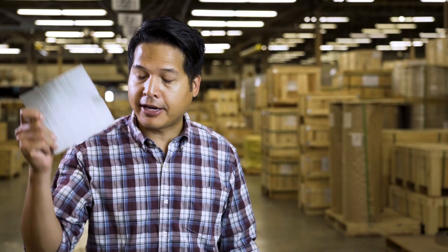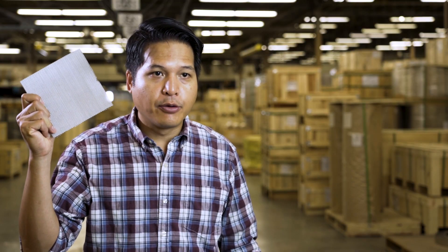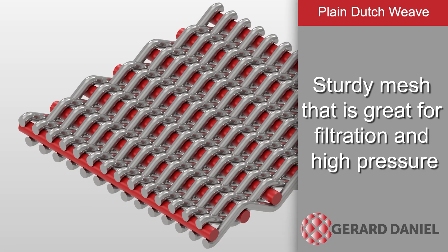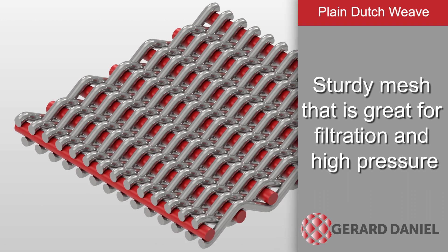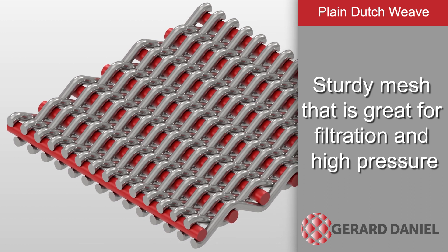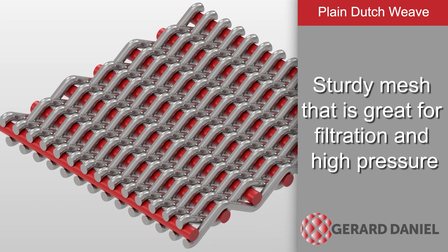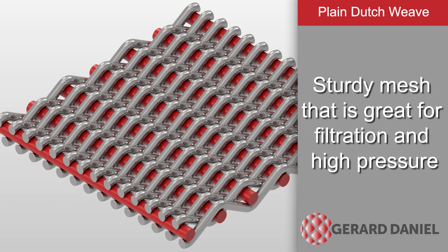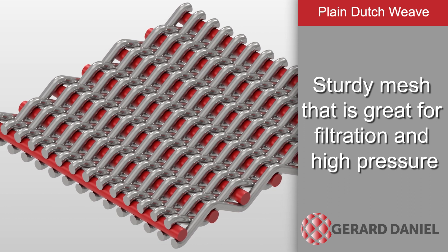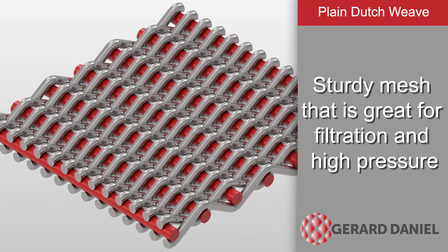The most basic of these patterns is the plain Dutch weave. With this pattern, thin fill wires are woven over and under each warp wire, alternating each row. This creates a very sturdy mesh with a tight pattern that excels at filtration and holds up well to high pressures, as well as being easy to clean.